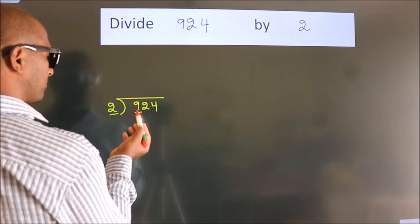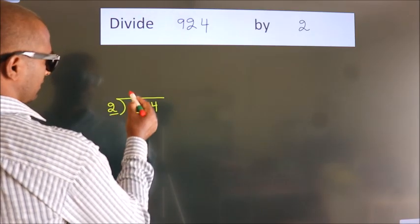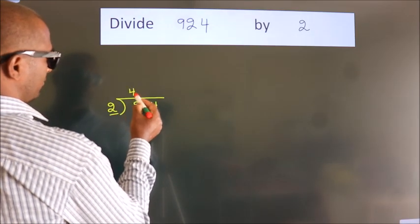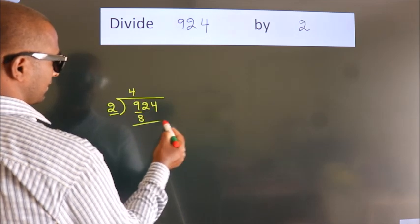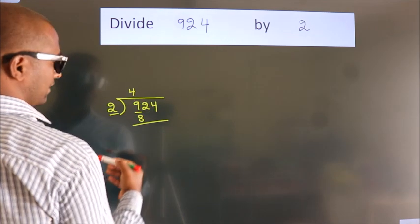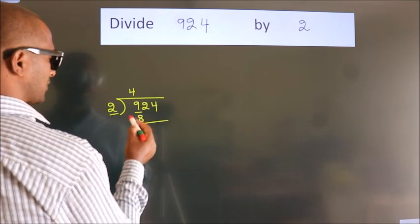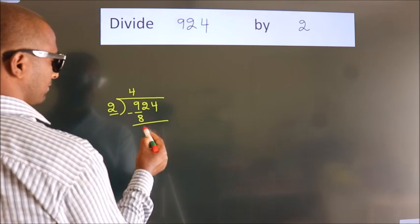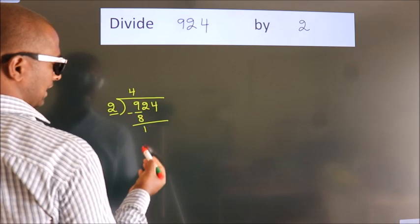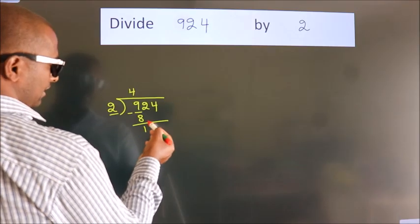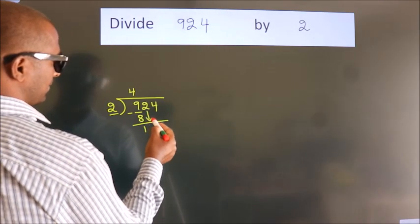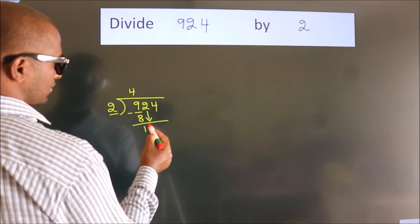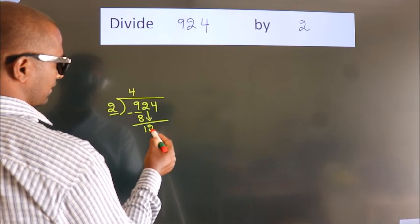A number close to 9 in the 2 times table is 2 fours, 8. Now we should subtract. We get 1. After this, bring down the beside number — so, 2 down.